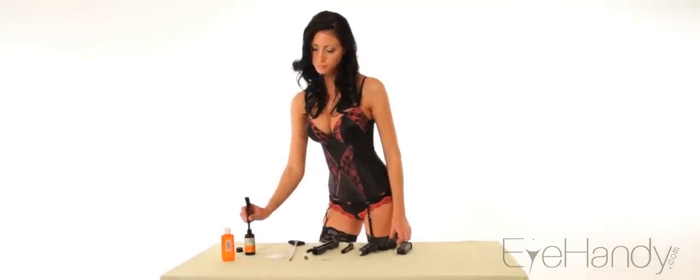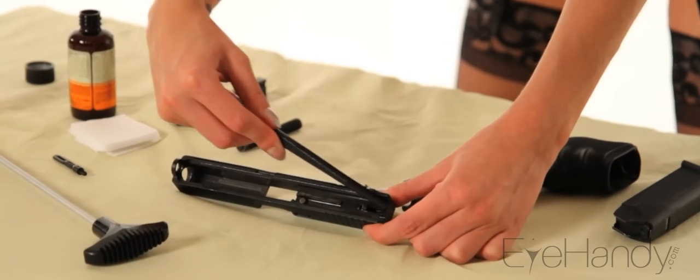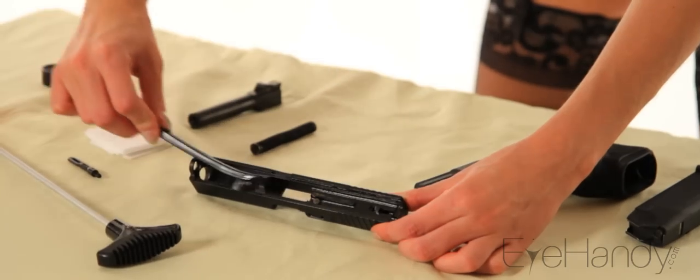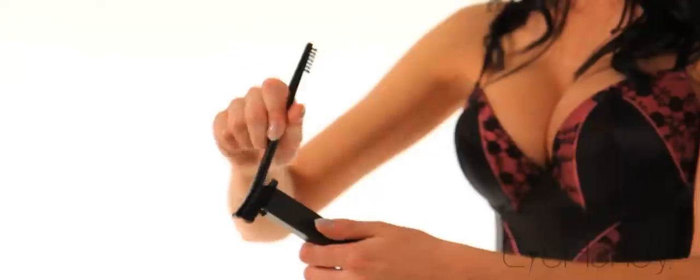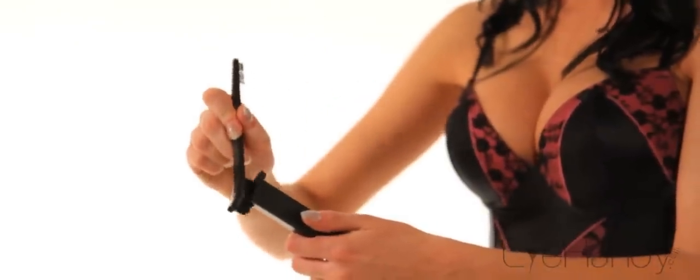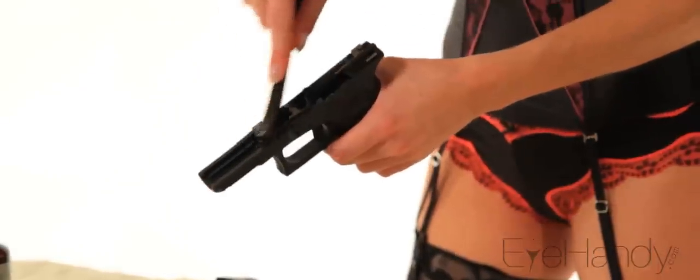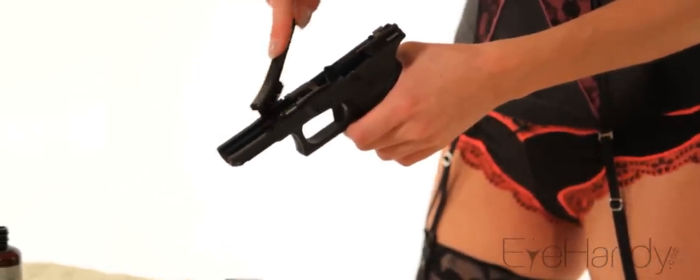Dip your cleaning brush in gun solvent and begin scrubbing the inside rails of your slide. Scrub the barrel's opening, removing any carbon buildup. Do the same for the inside top of your frame, focusing on the metal slide points.